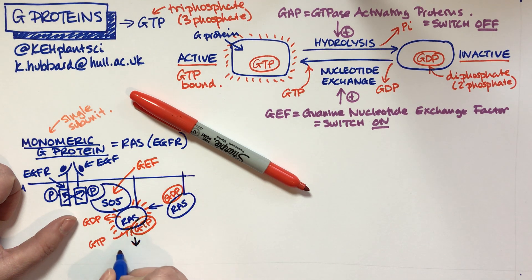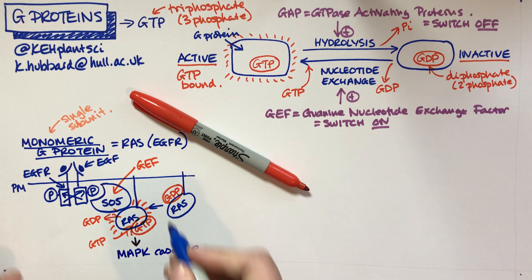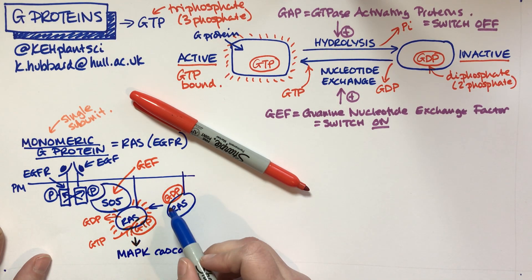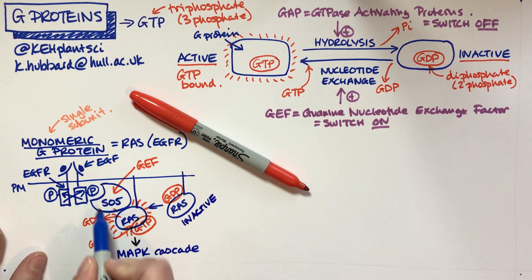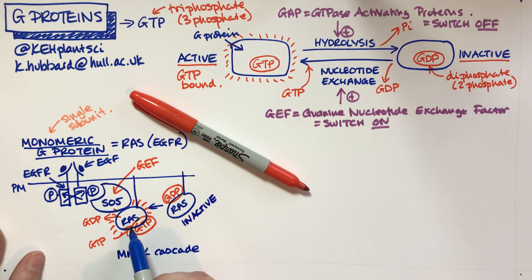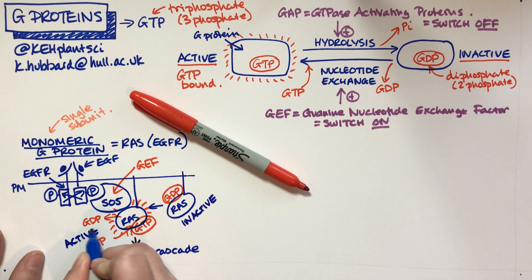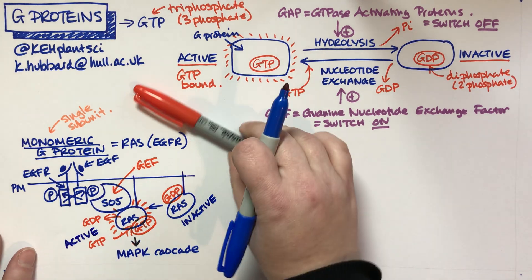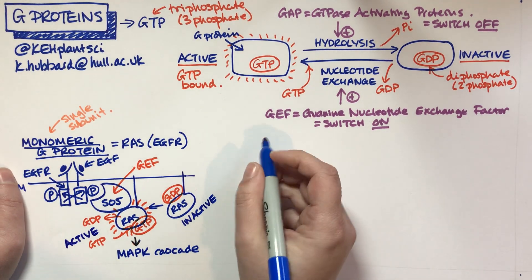When RAS is active, it activates something called the MAP kinase cascade, a really important series of events in that signalling pathway. So to recap: RAS is a single protein — a monomeric G protein. It starts in the GDP-bound, inactive form. When SOS is correctly positioned on the receptor, SOS acts as a GEF — an exchange factor — so RAS gets rid of its old GDP, binds a new GTP, becomes active, and can stimulate other processes.